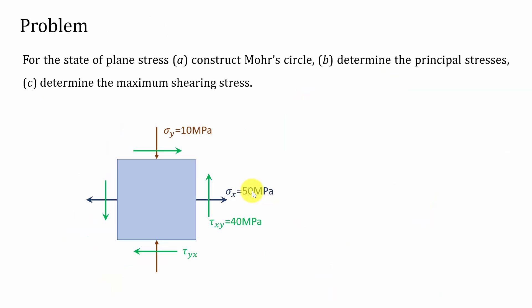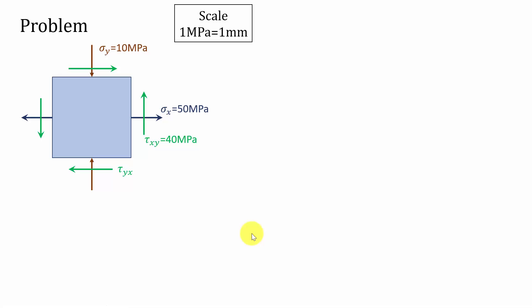Now let us solve a problem. For the state of plane stress, construct the Mohr circle, determine the principal stresses, and determine the maximum shear stress. We can see that sigma x is in the tensile direction, sigma y is in the compression direction, and tau xy is also in the counterclockwise direction. I am taking a scale of 1 MPa equal to 1 mm. While taking the scale, be clear that you can construct the Mohr circle within the given area.